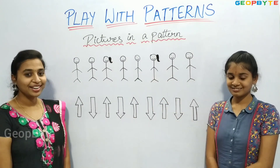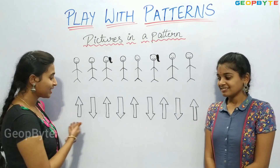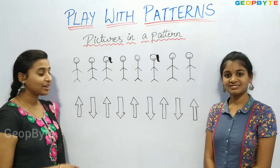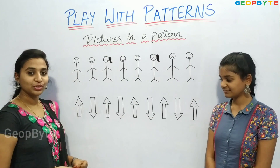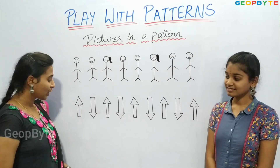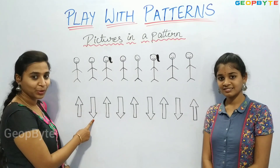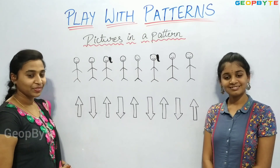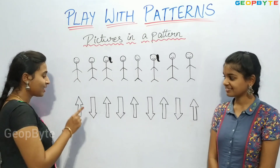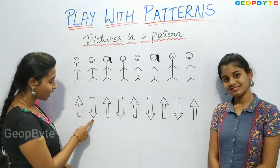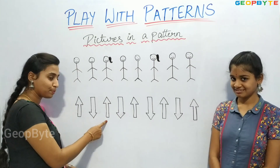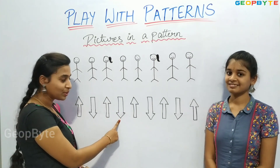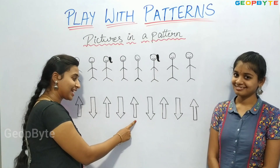Children, now let us see this pattern. In this pattern, we have used a rule of drawing an upside down arrow after an upside arrow. That is: upside arrow, upside down arrow, upside arrow, upside down arrow, upside arrow.